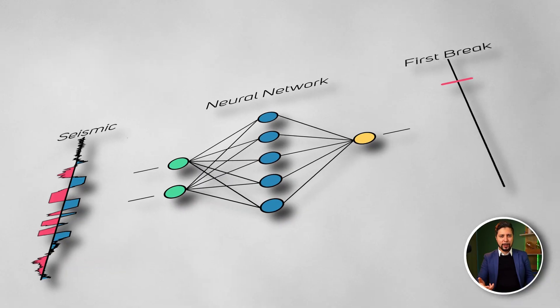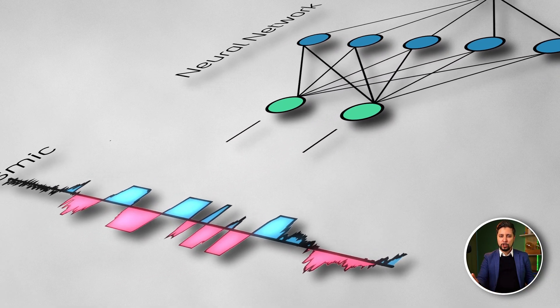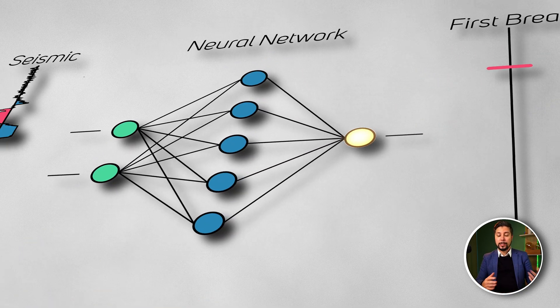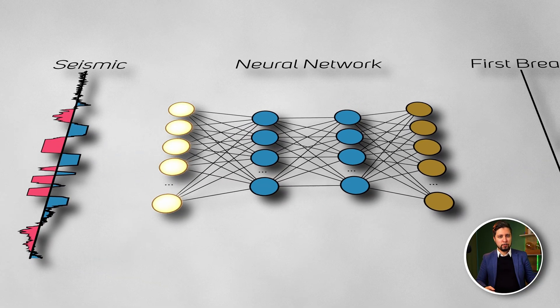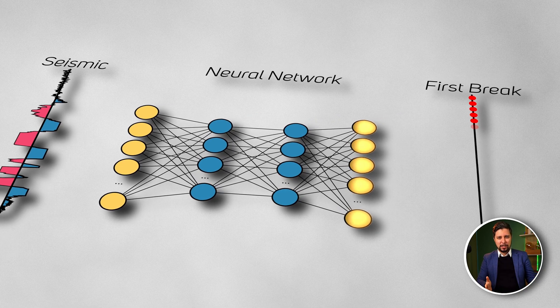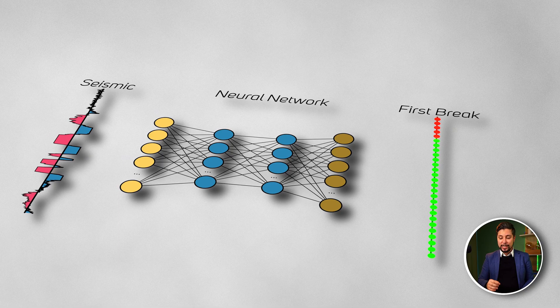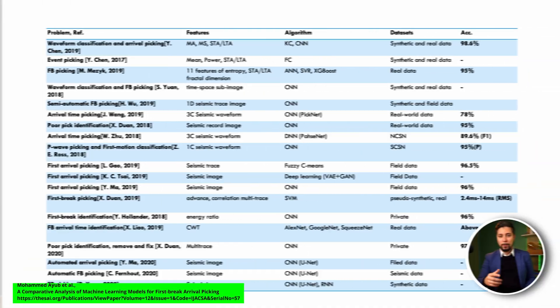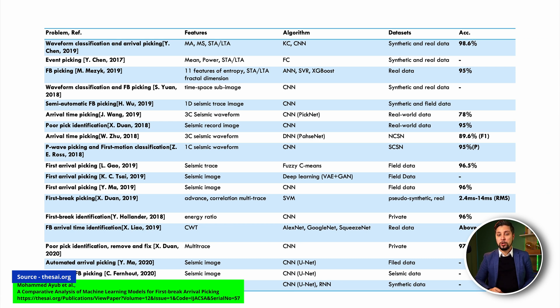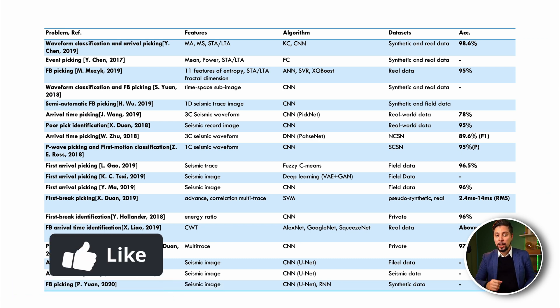In general, machine learning can handle this task in a few different ways. It can be considered as a regression — when given a trace, the model predicts one value: the arrival time. Alternatively, the task can be thought of as semantic segmentation, where the machine learning model predicts a binary mask for each trace before the first break. Every sample before the break is labeled as negative, and every sample after the break is labeled as positive. A summary table of related work shows that most studies used convolutional neural networks with a seismic image as input.